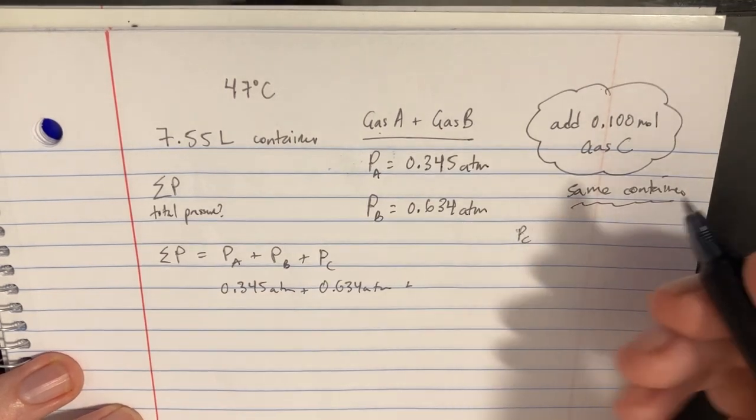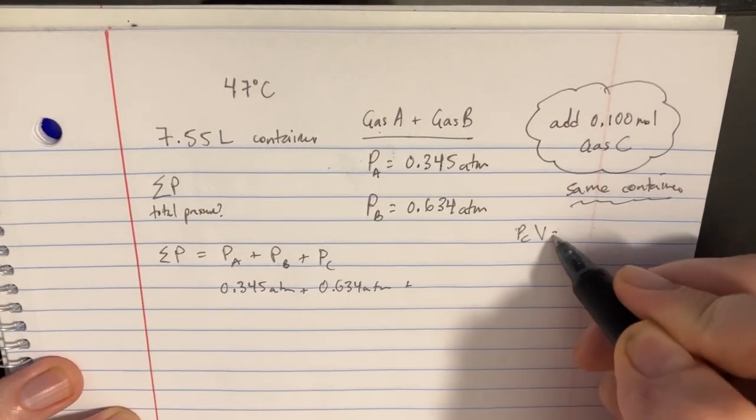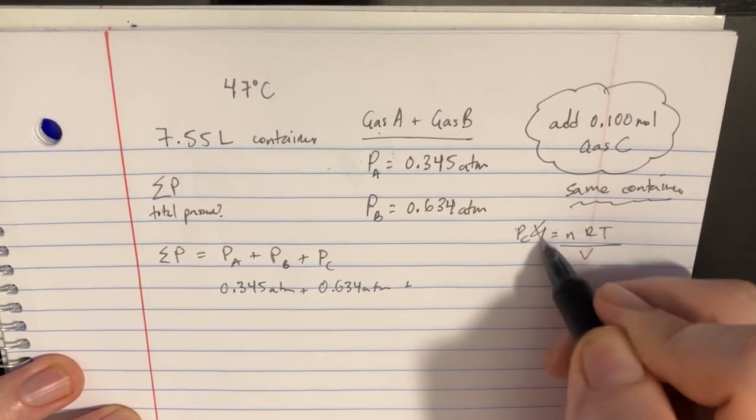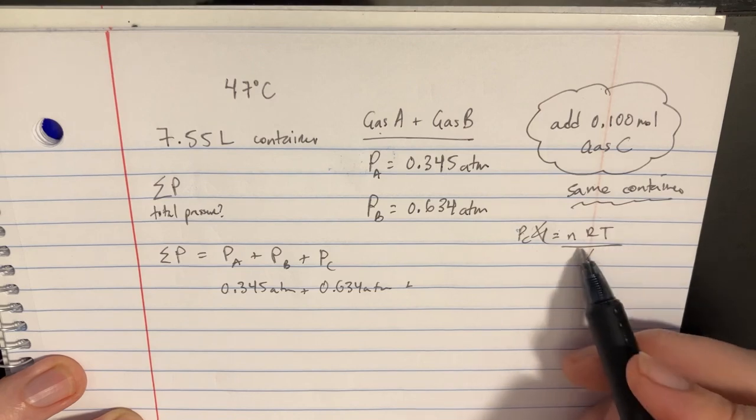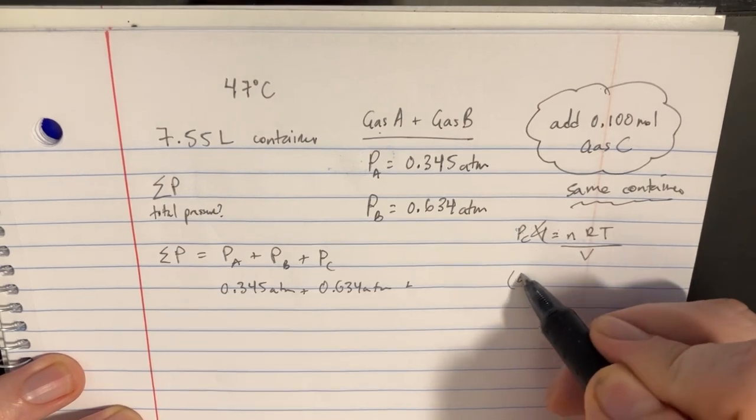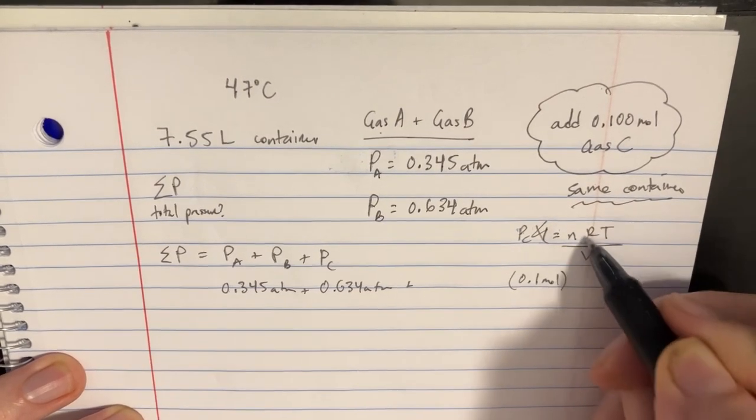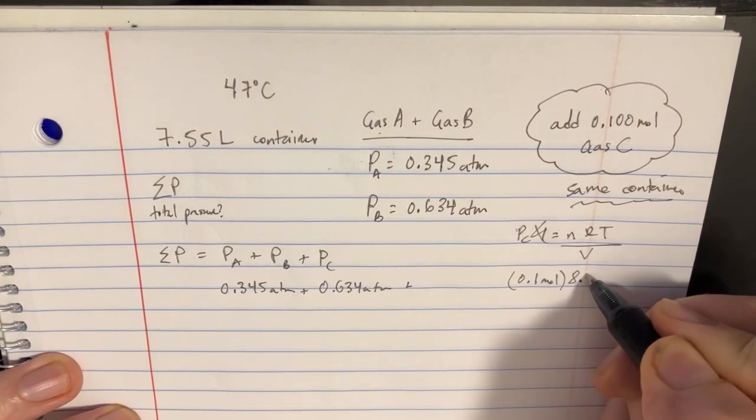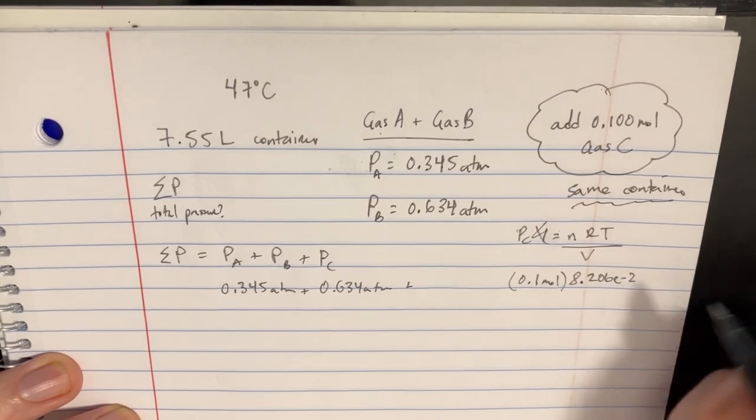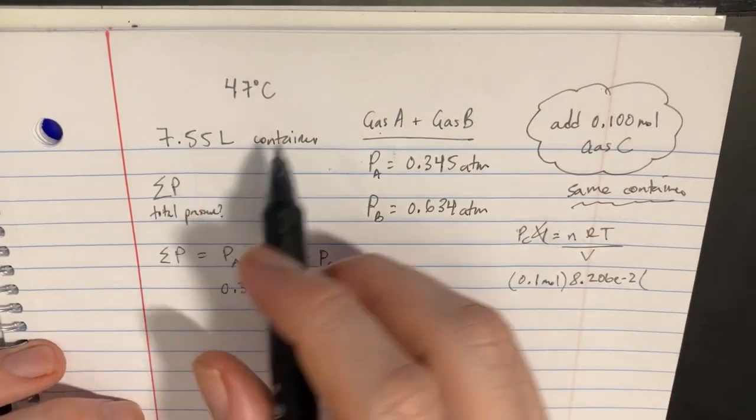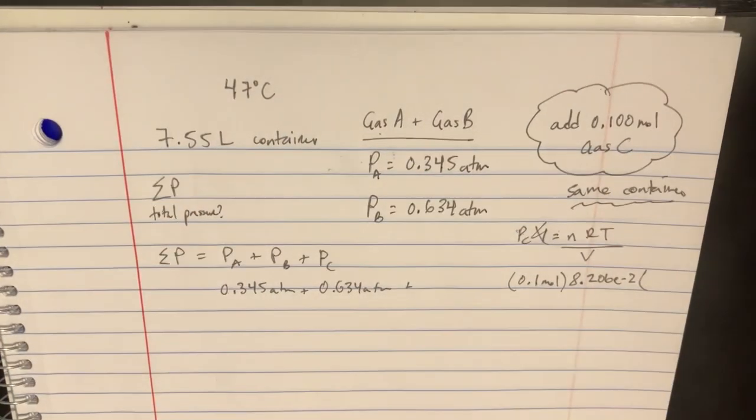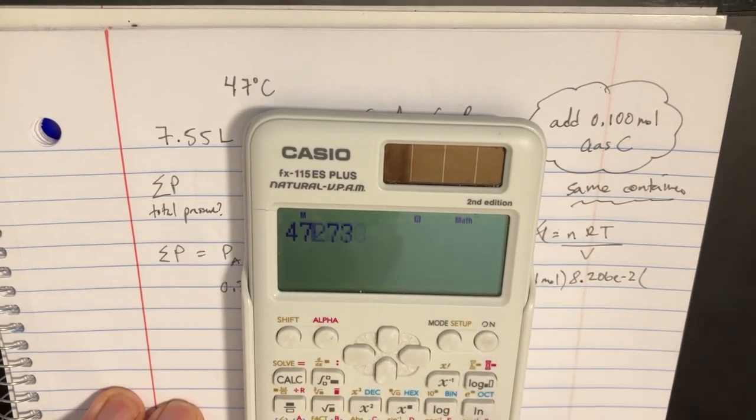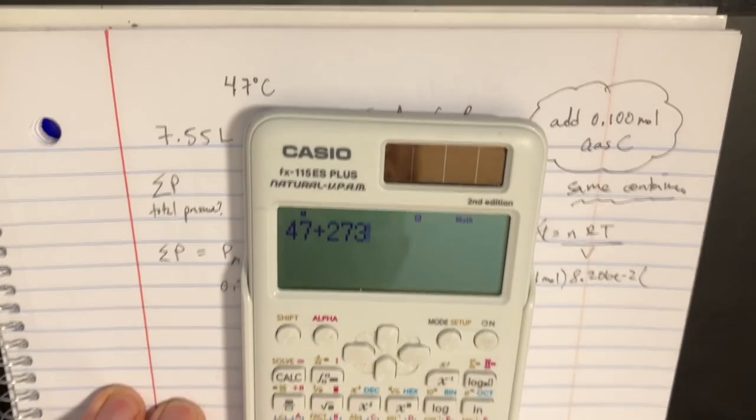Well in order to solve that one we got to use the PV equals NRT formula. Let's just go ahead and divide V on that side. And so we want 0.1 mole of that stuff. The R is going to be in atmospheres which is 8.206 times 10 to the negative 2. The temperature is in Celsius. Let's go ahead and just do plus 273.15.